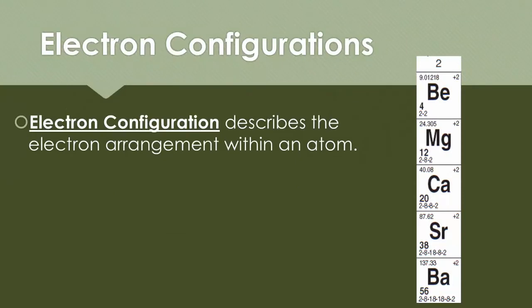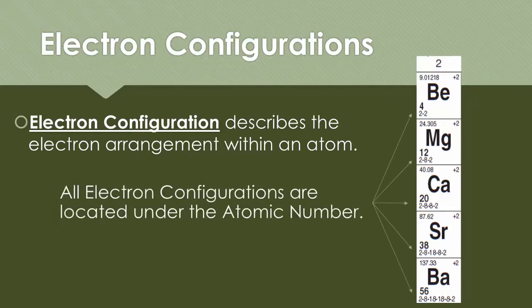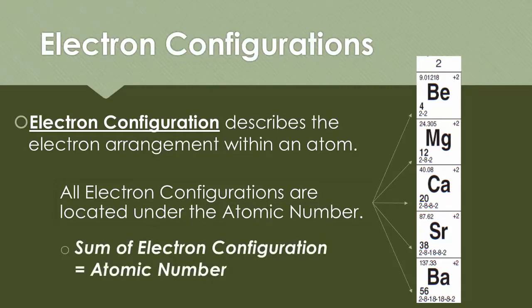Using your periodic table, we're going to be talking about electron configurations right now. An electron configuration describes the electron arrangement within an atom. As the arrows are pointing out to you, these are all the different electron configurations. They're all located under the atomic number on your periodic table. And you have to know this, that the sum, if you add up all those electron configurations per element, it's equal to the atomic number.